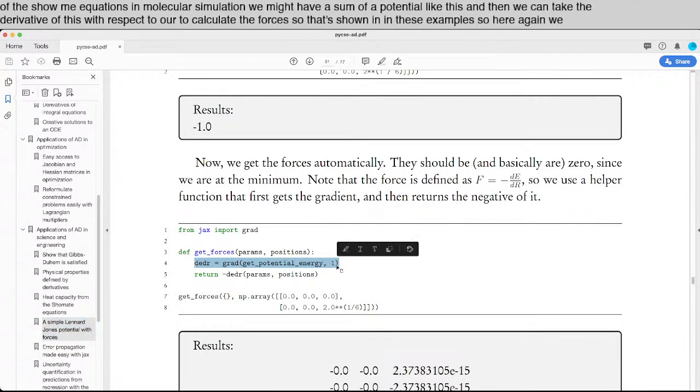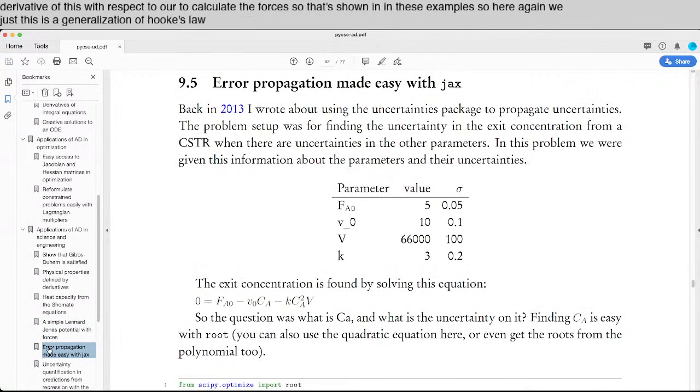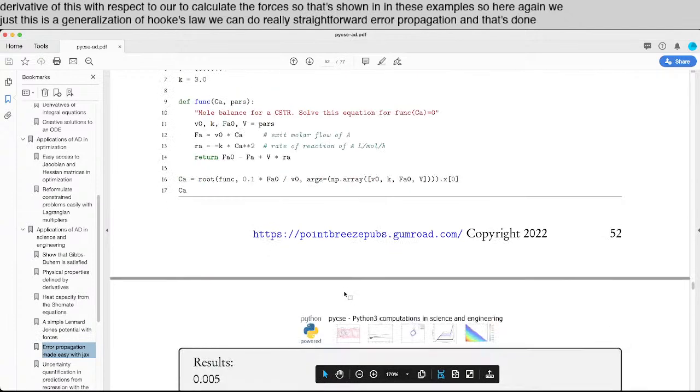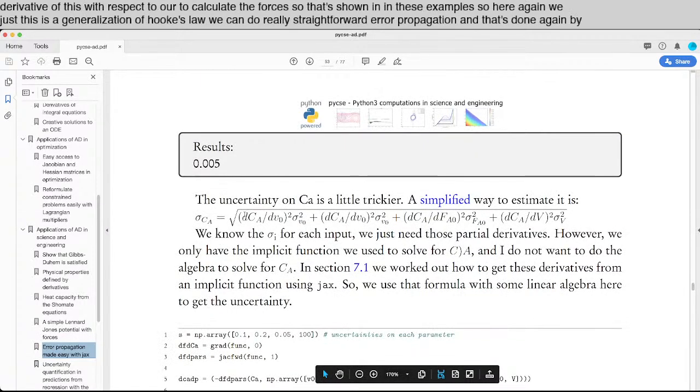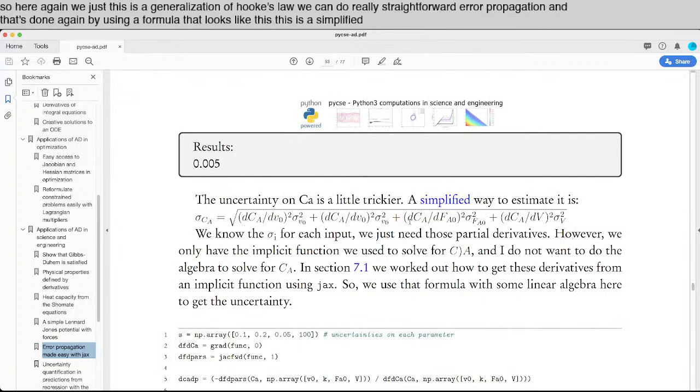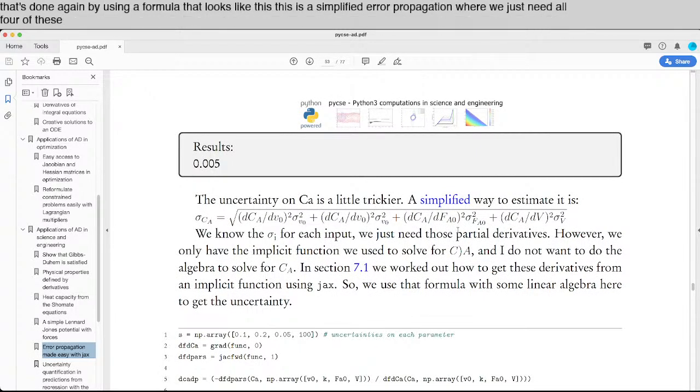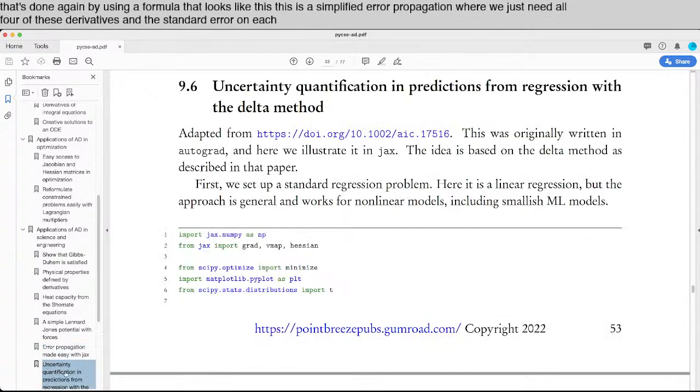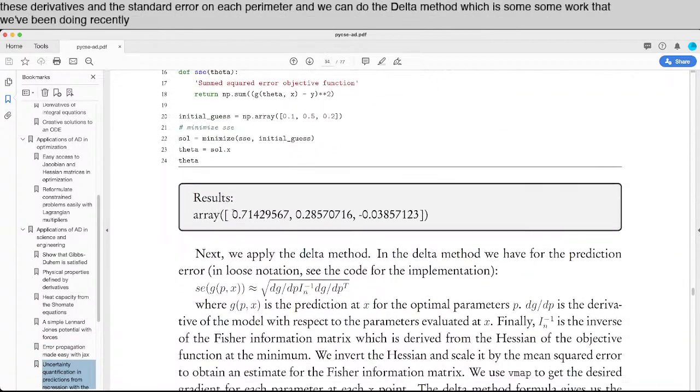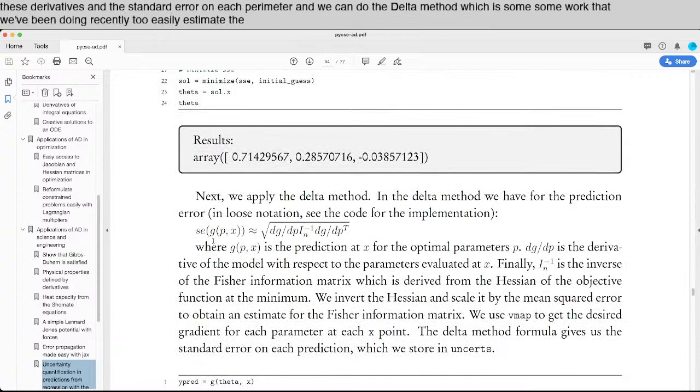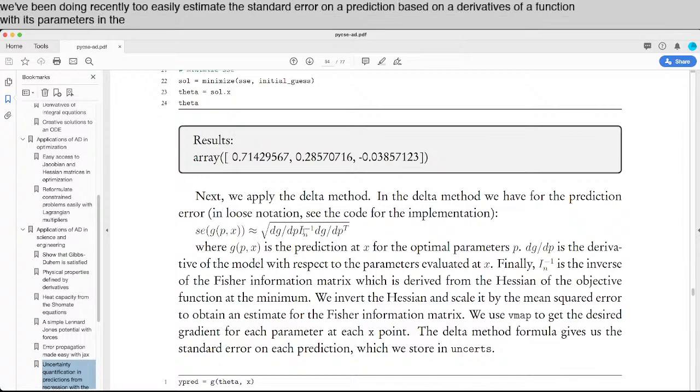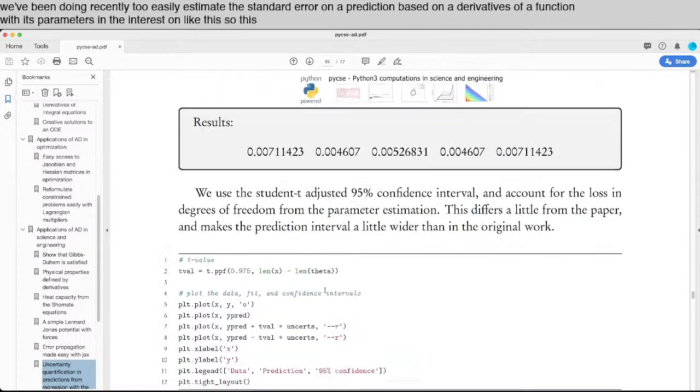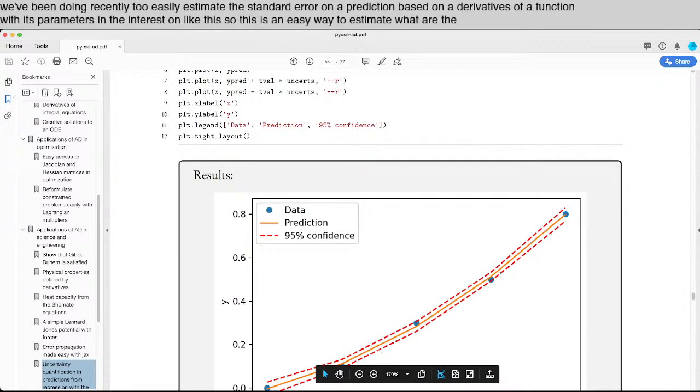So here again, this is a generalization of Hooke's Law. We can do really straightforward error propagation. And that's done again by using a formula that looks like this. This is a simplified error propagation where we just need all four of these derivatives and the standard error on each parameter. And we can do the delta method, which is some work that we've been doing recently to easily estimate the standard error on a prediction based on derivatives of a function with its parameters in the inverse Hessian like this. So this is an easy way to estimate what are the 95% confidence intervals.